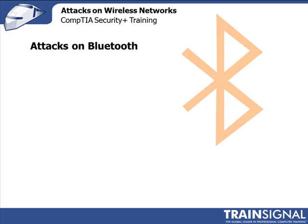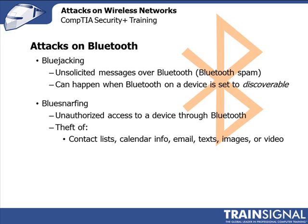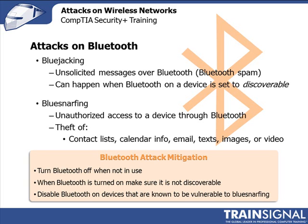Next, let's talk about attacks on Bluetooth. Blue jacking is unsolicited messages over Bluetooth — think Bluetooth spam. Blue jacking can happen when a Bluetooth device is set to discoverable. Even worse is blue snarfing, which is the unauthorized access to a device through Bluetooth. Blue snarfers can steal contact lists, calendar info, emails, texts, and even images or video. Now, this isn't nearly as frightening as it sounds. Just because a device has Bluetooth doesn't mean that it's automatically vulnerable to blue snarfing. Blue snarfing is really only possible on more simple PDAs, mobile phones, and tablets. So make sure to know the model of all the mobile devices used by your employees, look up each one to see if any have known blue snarfing issues, and if there are, the only way to be completely safe is to turn Bluetooth off, not just set it to undiscoverable.